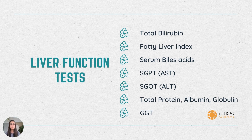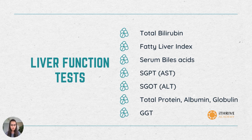The next test is serum bile acid. As we saw, one of the functions of the liver is to synthesize bile. If serum bile acids are tested and there is a problem with the measurement, there is some problem with the liver as well.